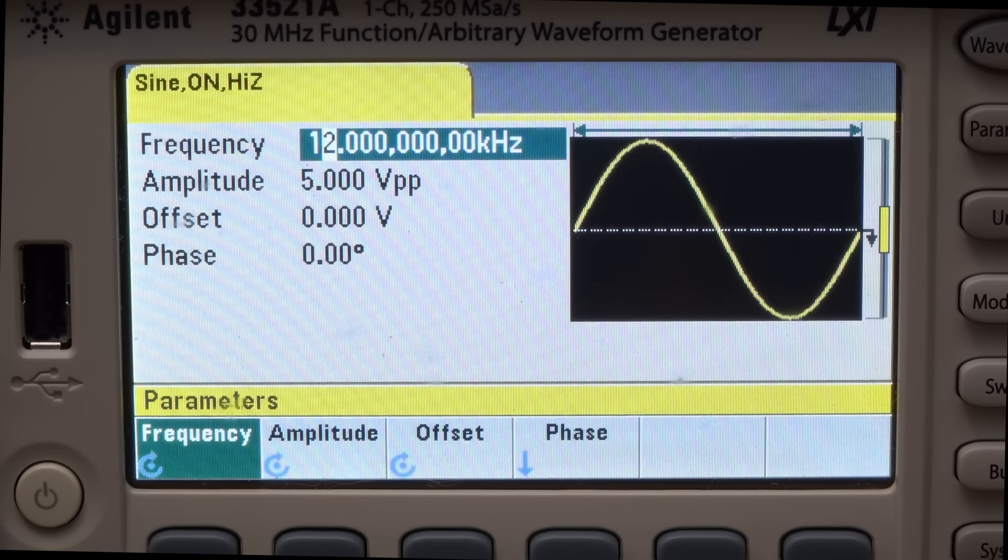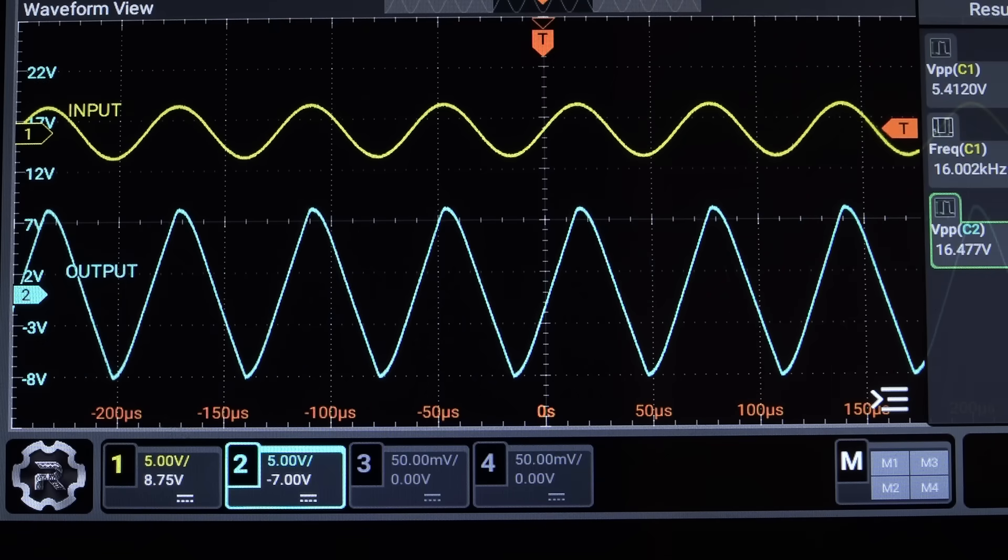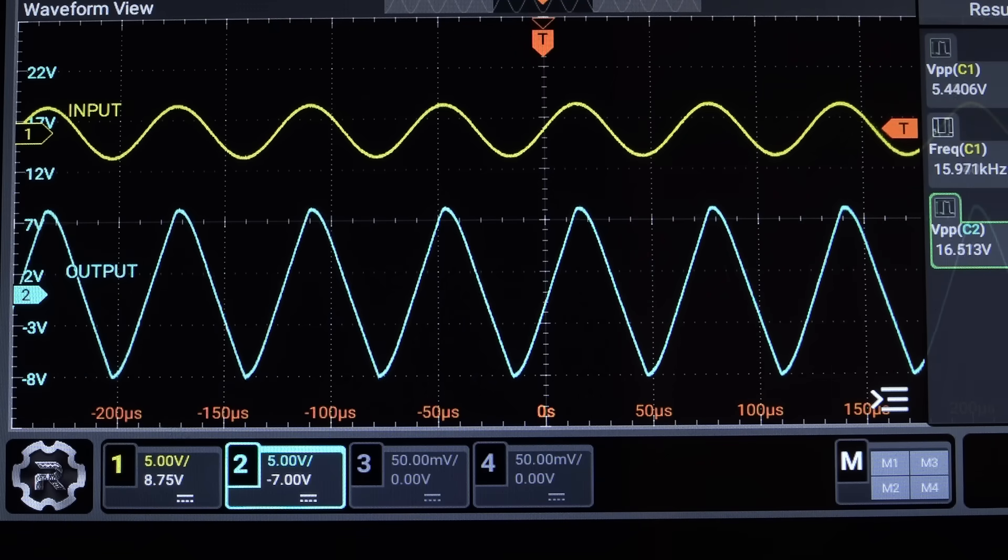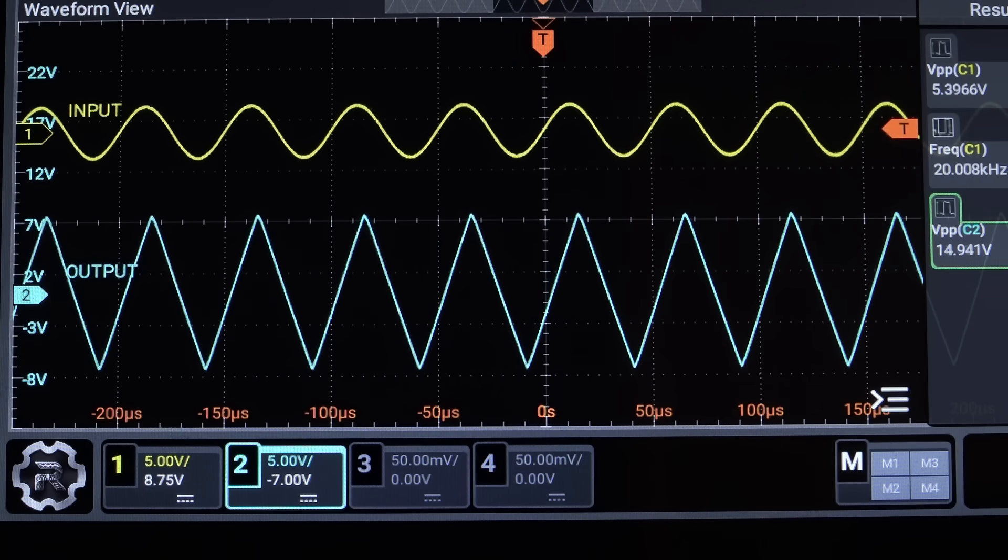Now watch what happens when I increase the frequency of my input sine wave. At around 16 kHz, it starts looking a lot less rounded. Now if I increase the frequency to 20 kHz, it's not even a sine wave anymore. It's become a triangle wave. I'm not trying to make a guitar distortion circuit here, so this op-amp has problems.